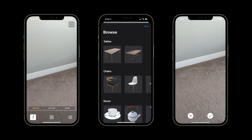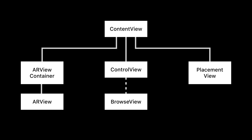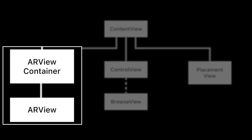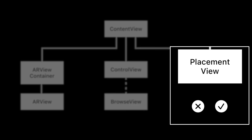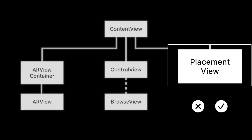Given these screens and views, let's take a look at what our app looks like in diagram form. This is a simple diagram of key views in our app. The content view is the main view in our app. The content view contains an ARView container, a control view, and a placement view. The ARView container acts as a wrapper for our ARView. From our control view, we can launch our browse view as a SwiftUI sheet. And finally, when the user has selected a model in our browse view, the placement view should be displayed to either confirm or cancel placement of the model.